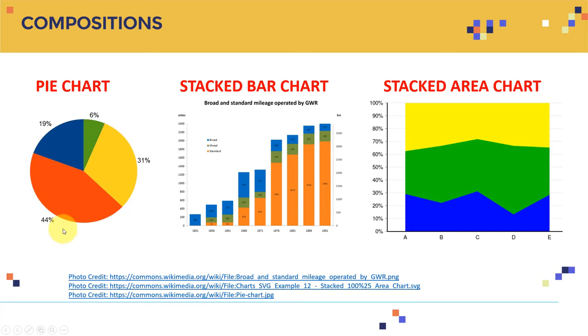We can also visualize data using compositions such as pie chart, stacked bar chart, and stacked area chart. For example, here I can show on one pie, I can show the compositions. For example, I can see 31% of the Canadian population voted liberals.